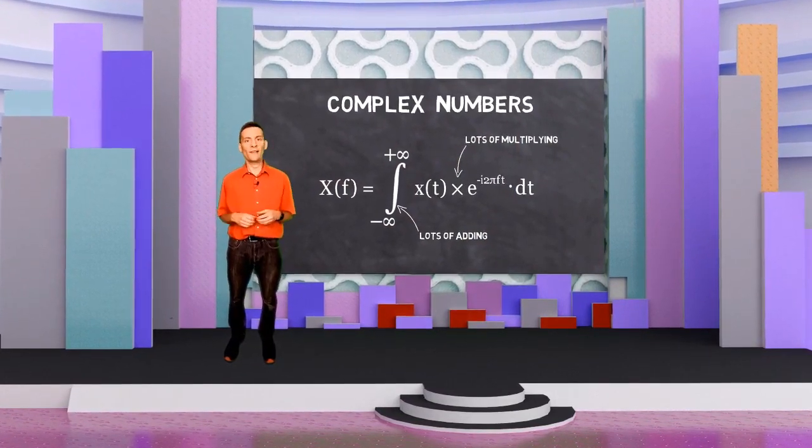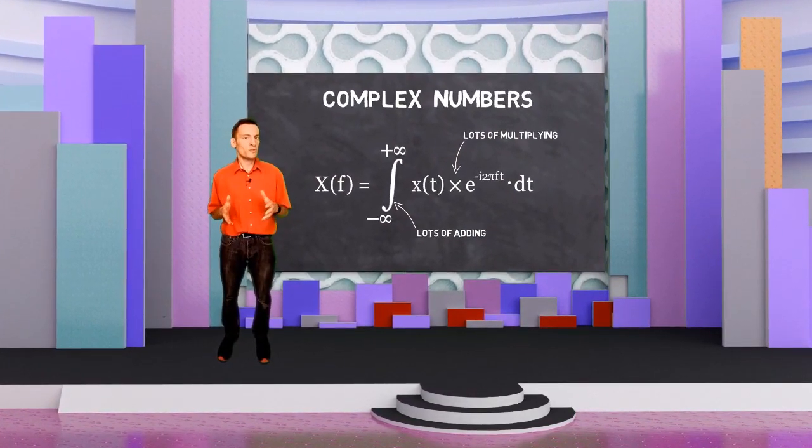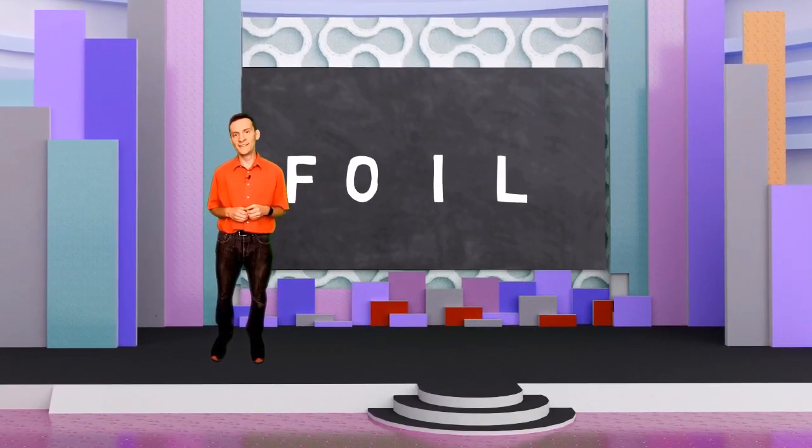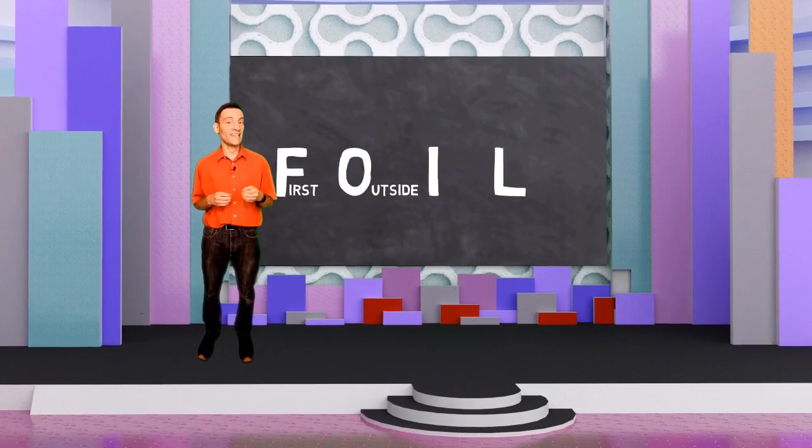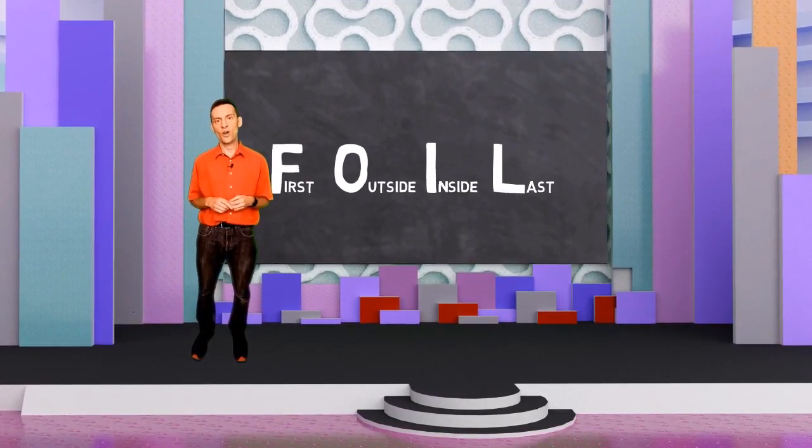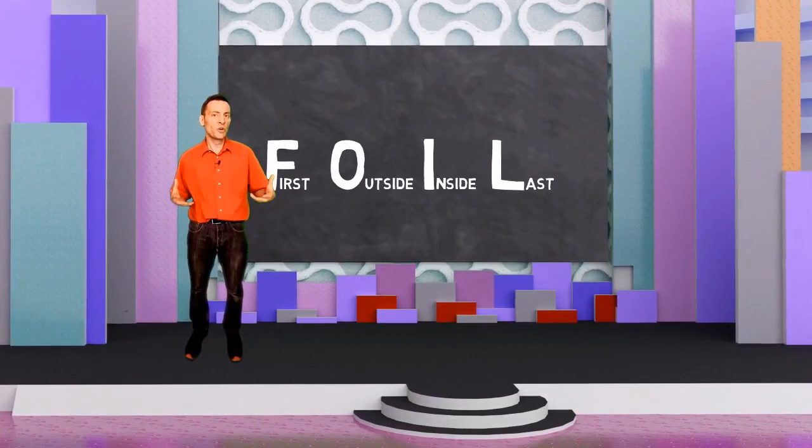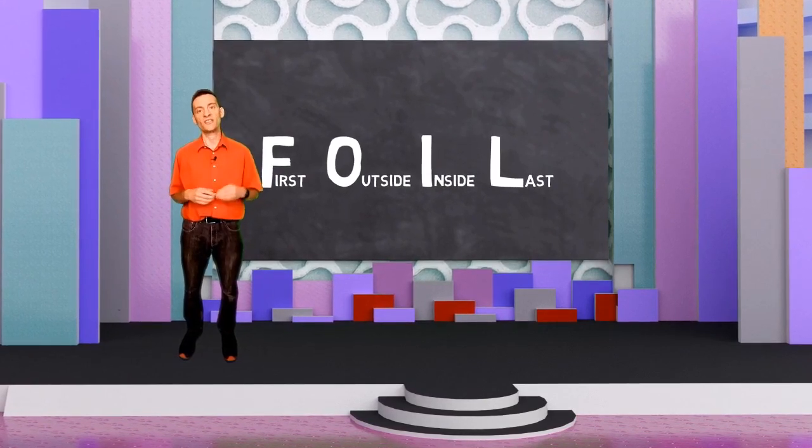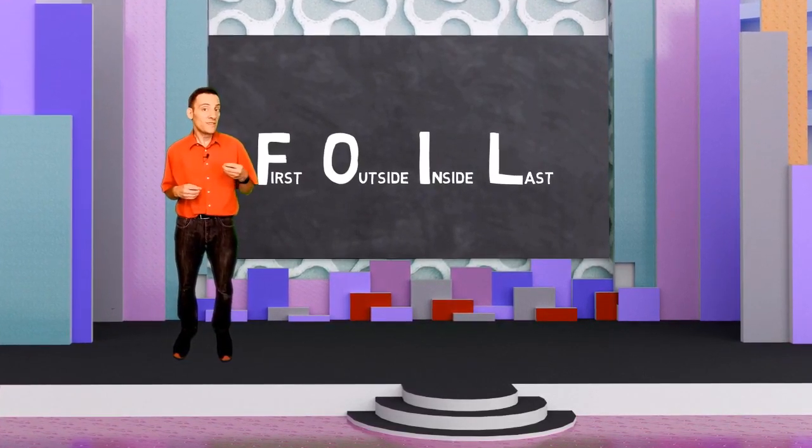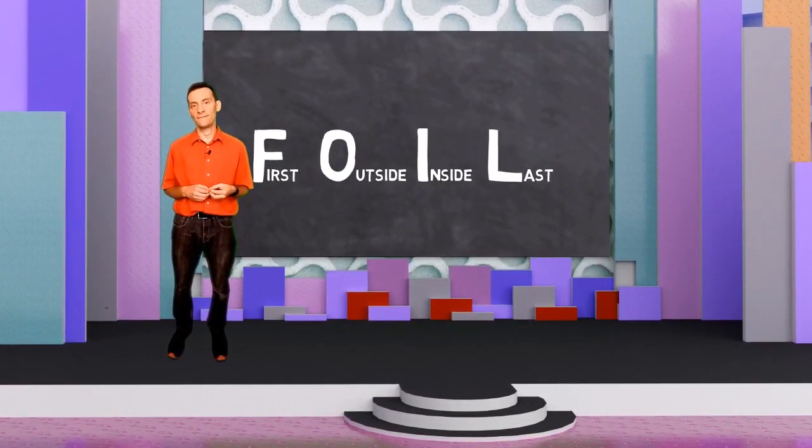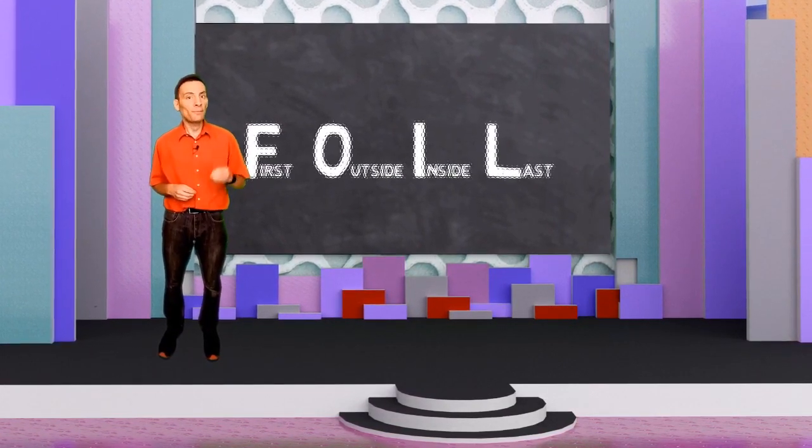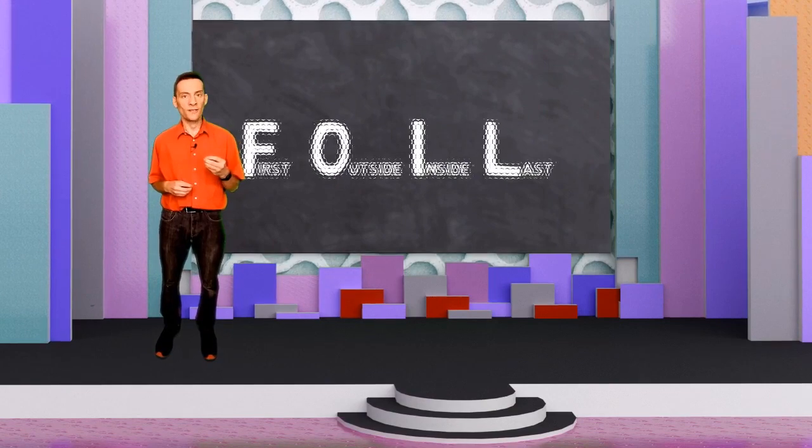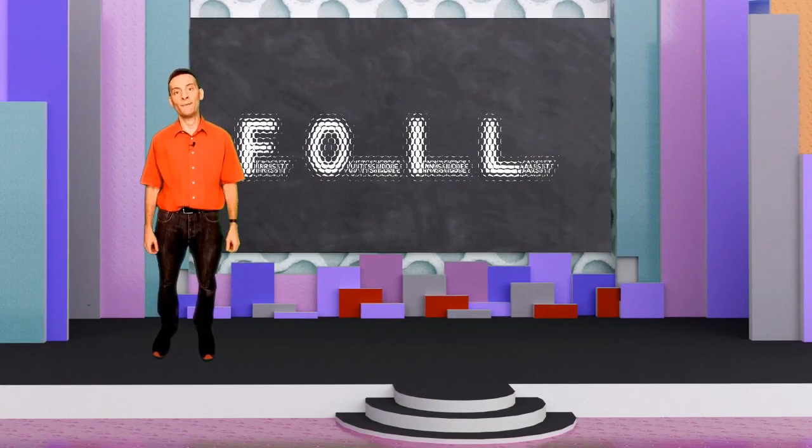When we multiplied two complex numbers, we saw that we could use the FOIL method to find our answer. FOIL stands for First, Outside, Inside, Last. We have to split the multiplication operation into four stages. We can use the same method for dividing. However, we're going to hit a problem. A problem that can only be solved by a special type of complex number.